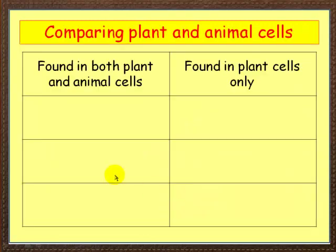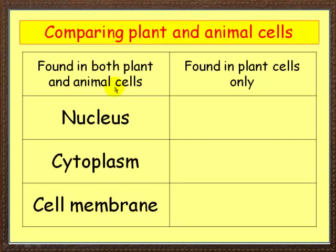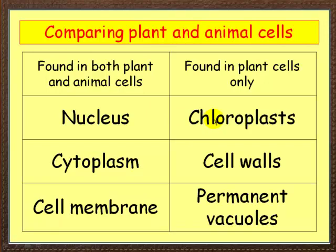A really popular exam question is to compare plant and animal cells. What do we find in both? A nucleus, cytoplasm, and cell membrane — all common to both. What's only found in plant cells? Chloroplasts, the cell wall, and the permanent vacuole. You need to learn this because it often comes up in exam questions.